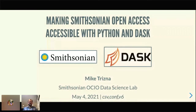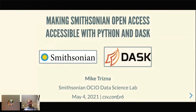My name is Mike Trisna. I'm a data scientist with the Smithsonian in a group called the Smithsonian OCIO, which is our IT office data science lab. I'm going to be talking today about the Smithsonian Open Access project that started last year and making the data that was released with that more accessible using Python and Dask, and then show a few examples of that in practice.